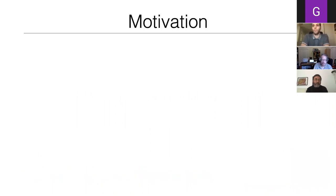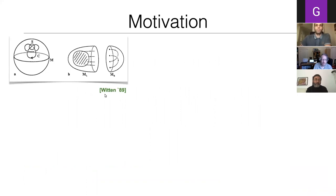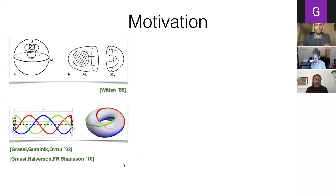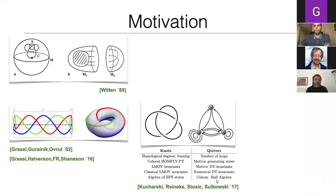Let me start with the motivation. Why do we care about knot theory? Knot theory is important in physics. There was Witten's paper in 1989 where he related knot theory to Chern-Simons theory. There have also been papers where knot theory was found to occur as monodromies of links and as CFTs. More recently, Piotr and collaborators put forward this knot-quiver correspondence.